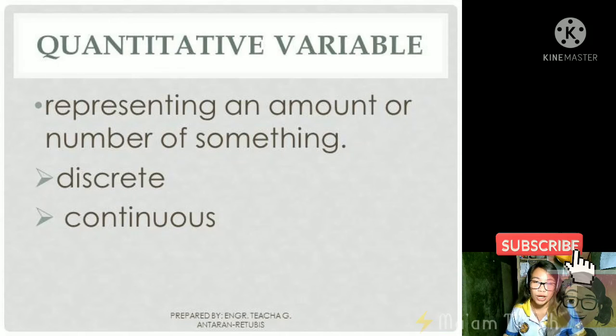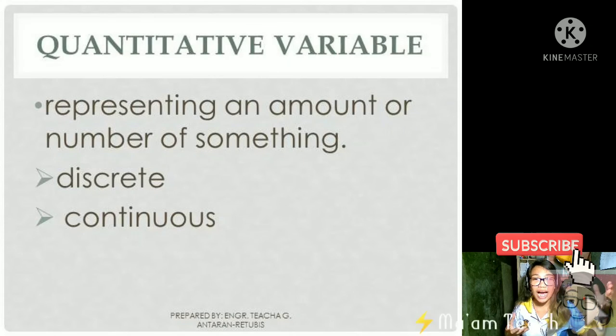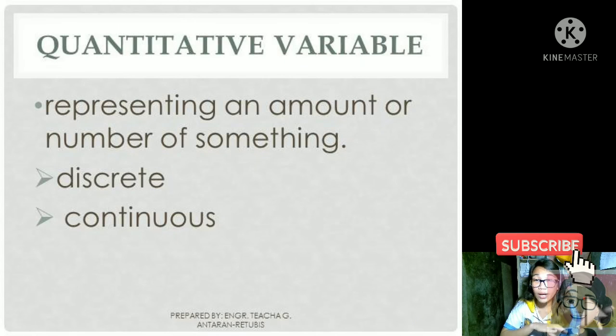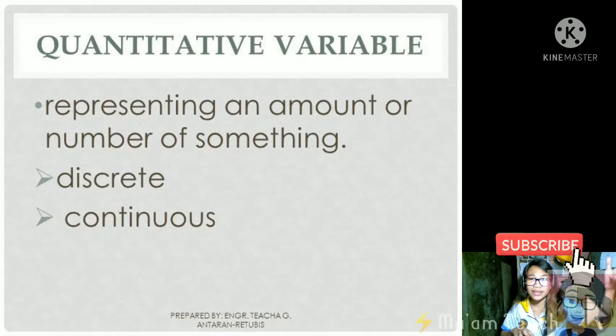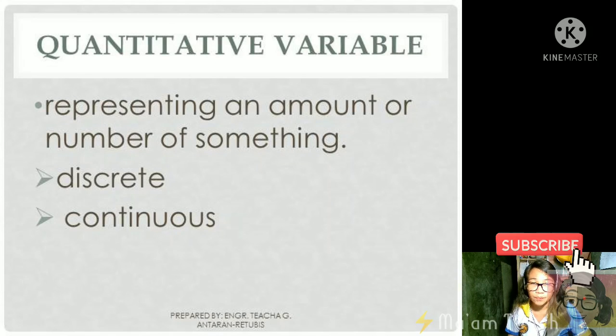While eto naman continuous, those are non-countable variables. It cannot take finite values. Like for example, yung height natin, our height, our weight—it continues as time goes by. Like for example, today we are 40 kilograms, so maybe next year it could be that we lose weight or gain weight. Or maybe in the next 20 years we may gain a lot of weight or maybe magbago rin yun. Those are things that are considered as continuous.